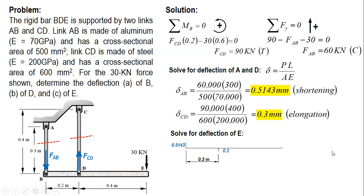This is 0.3 millimeters. And then we connect bar BDE. And the vertical distance is the deflection of E. This is the deflection of E. We denote this one as Y sub E.